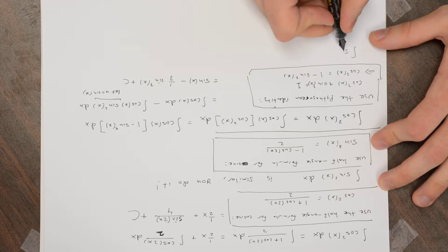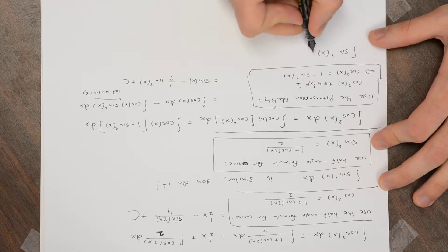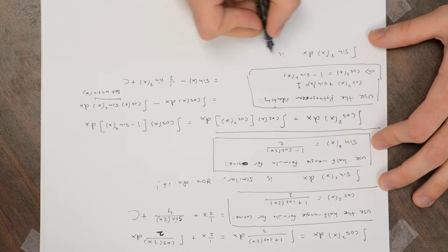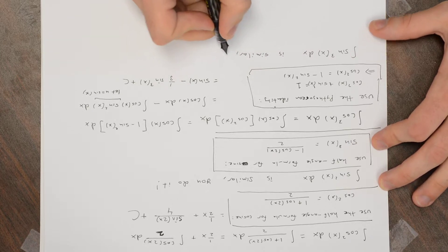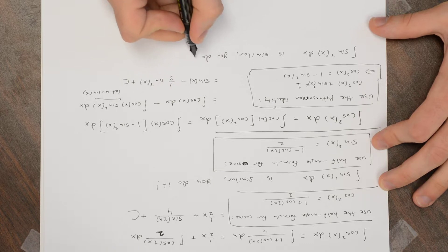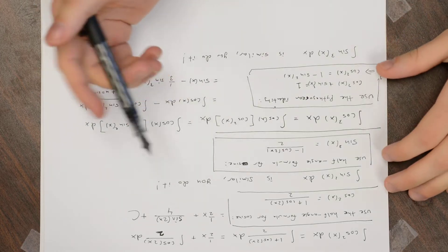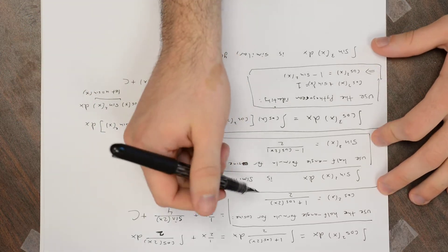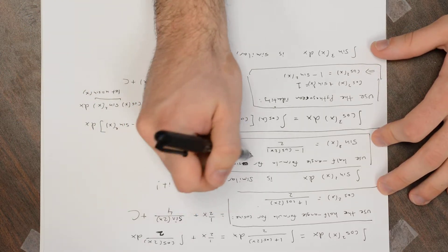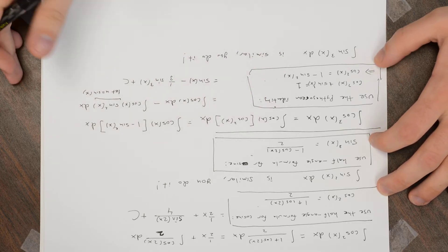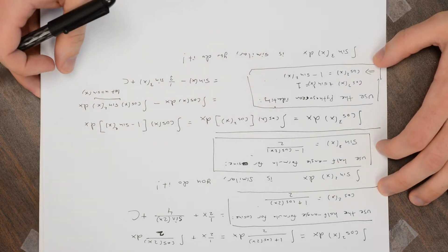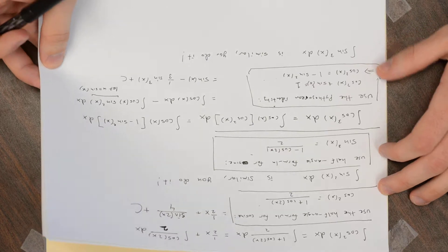The integral of sine cubed is going to be similar — you do it. The general approach to these trig integrals is to use the half-angle formulas and the Pythagorean identity to reduce higher powers to manageable ones.